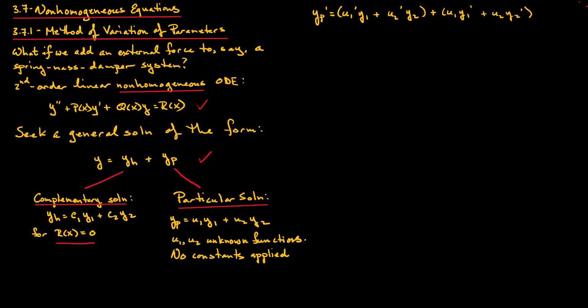We will pause here and present a condition that must be satisfied by U1 and U2. At this point, U1 and U2 are completely arbitrary functions. So we will impose the condition that U1'Y1 + U2'Y2 = 0.